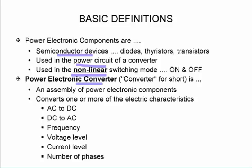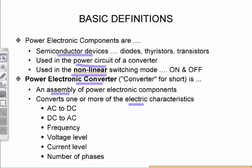The power electronic converter is an assembly of the power electronic components and it will convert one or more of the following electrical characteristics: AC to DC, DC to AC, it might be a change in frequency, voltage level, current level, or even the number of phases. So it can be a single phase supply and if it is a variable speed drive it can have a three phase output to drive the motor.